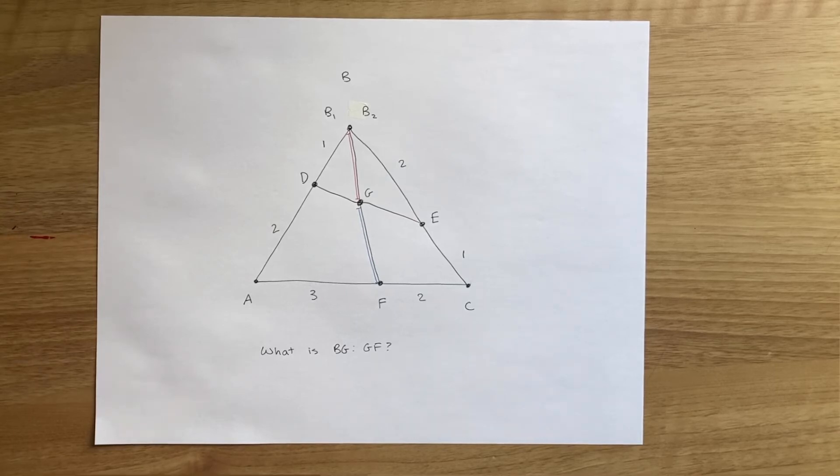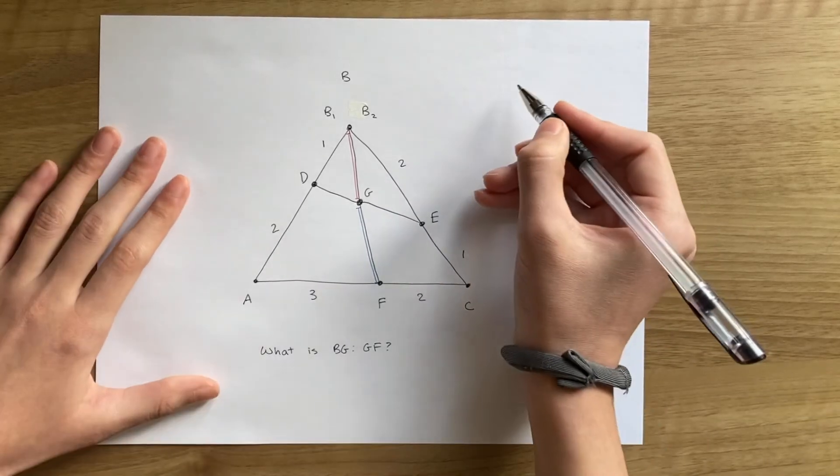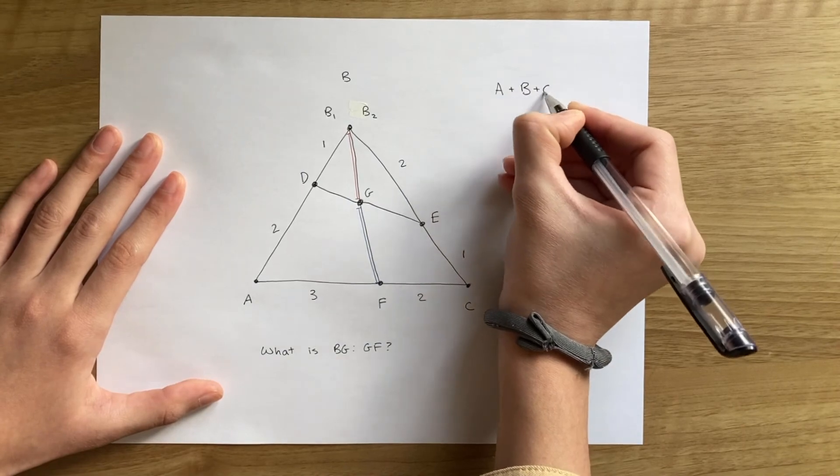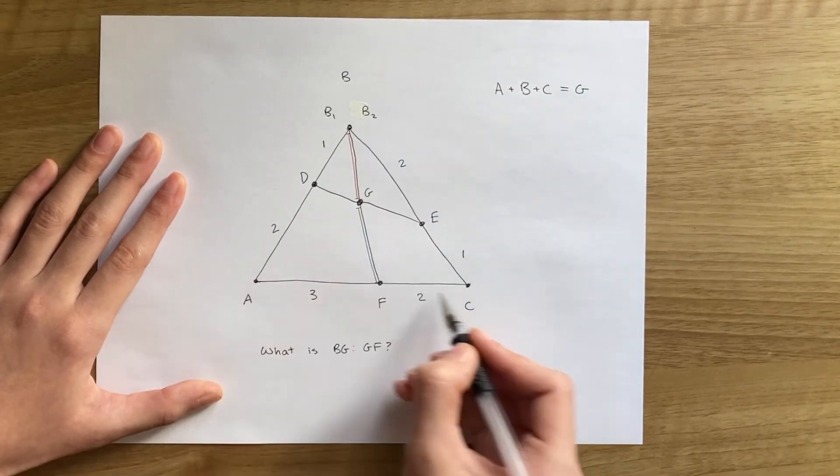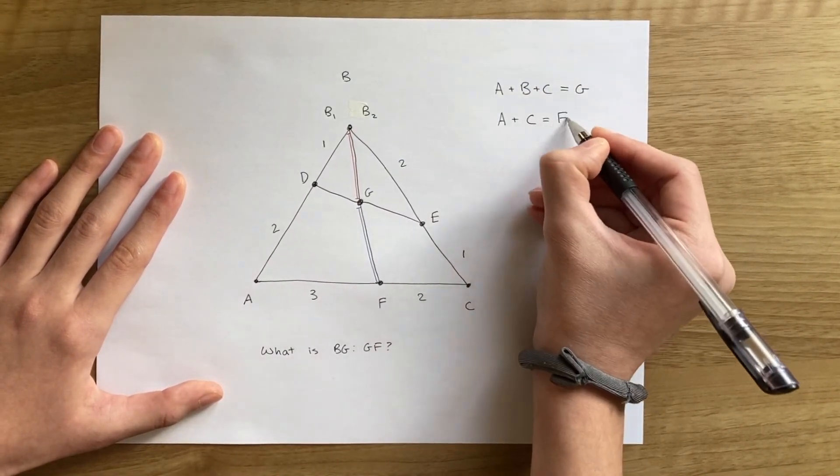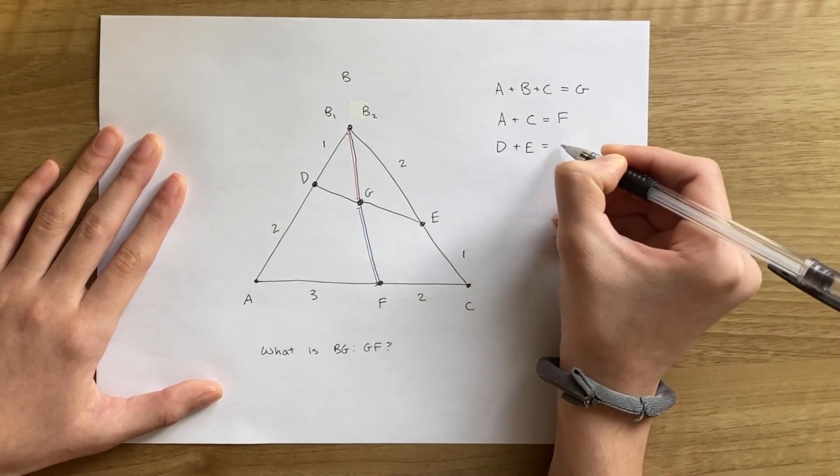So now let's write down all the centers of mass that we know. The center of A, B, and C is G. The center of A and C is F. The center of D and E is G.